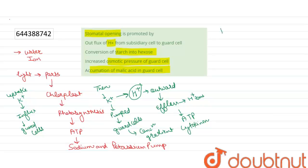The concentration of potassium ions increases in the guard cells, and at the same time, the concentration of protons or H+ ions decreases in the guard cell.